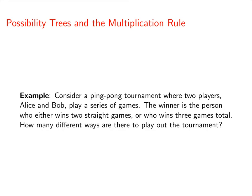Let's say we have a ping pong tournament. Two players, Alice and Bob, are going to play a series of games. The winner is the person who either wins two straight games or who wins three games total. How many different ways are there to play out the tournament?